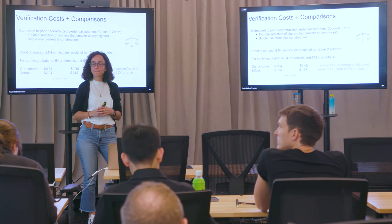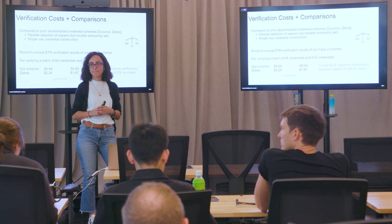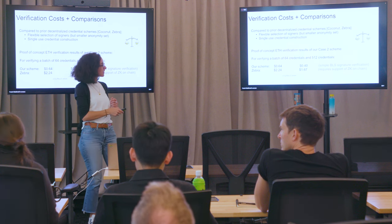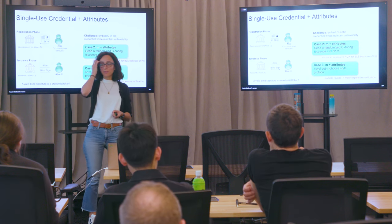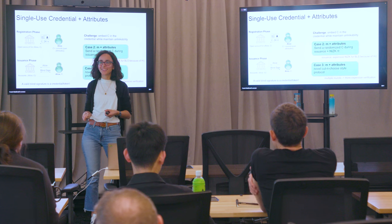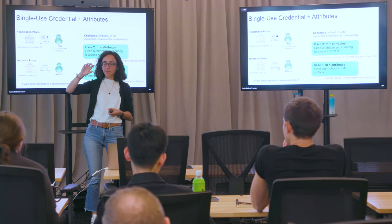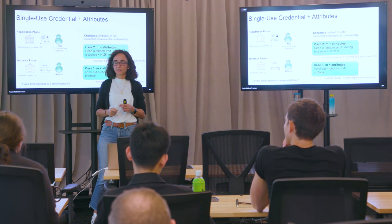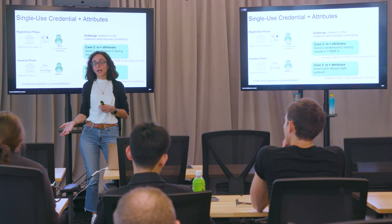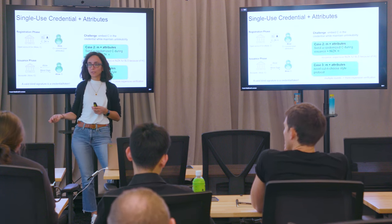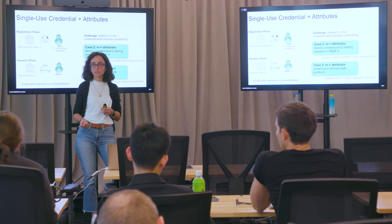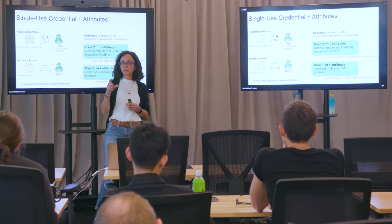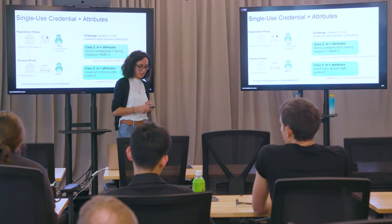Regarding using group elements as attributes instead of a non-algebraic hash function: the problem comes from the fact that the BLS signature needs to hash the message to a curve point. So for the signature itself, you still need the hash function to map to an elliptic curve point. This is a fundamental constraint of the BLS construction.